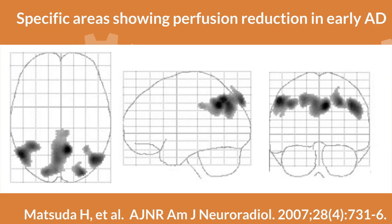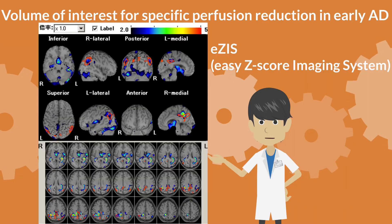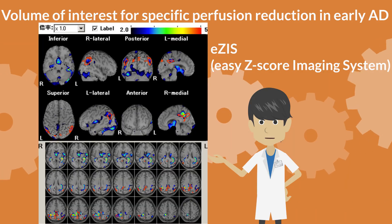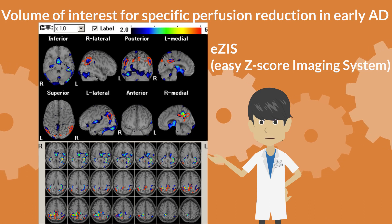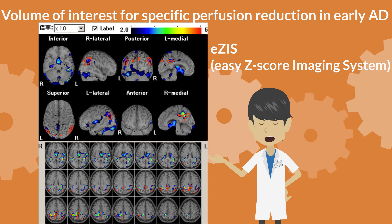Statistical brain imaging analysis using statistical parametric mapping (SPM) detects areas of significantly reduced cerebral perfusion in the early stages of Alzheimer's disease, showing significant decrease in the bilateral inferior parietal lobes, posterior cingulate gyrus, and precuneus. In the EZI statistical image analysis system, the areas of reduced cerebral perfusion specific to early Alzheimer's disease detected by SPM are surrounded by red lines.